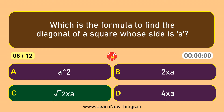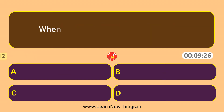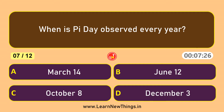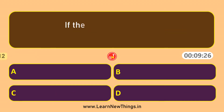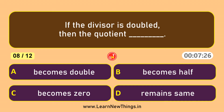Which is the formula to find the diagonal of a square whose side is a? Square root of 2 into a. When is Pi day observed every year?